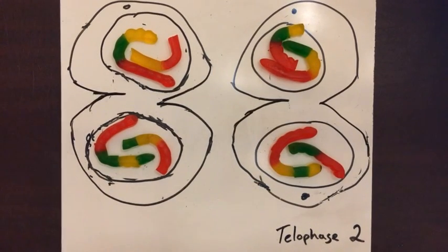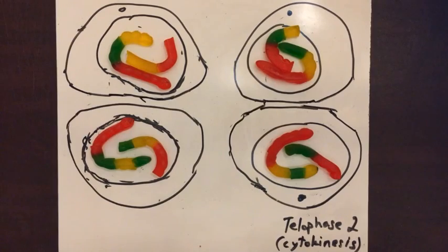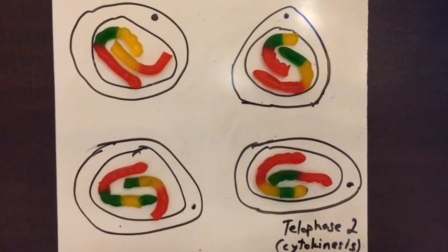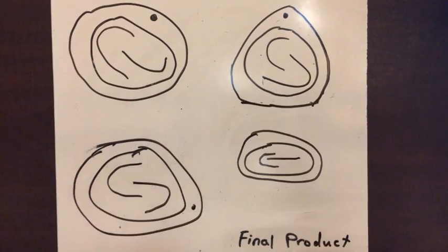Now in cytokinesis II, the cytoplasm of the two haploid cells divide completely into four genetically unique haploid cells. All in all, meiosis has made four gametes from one diploid cell.